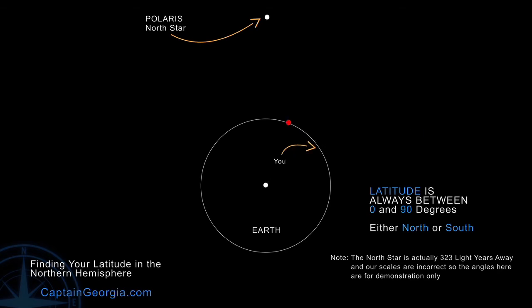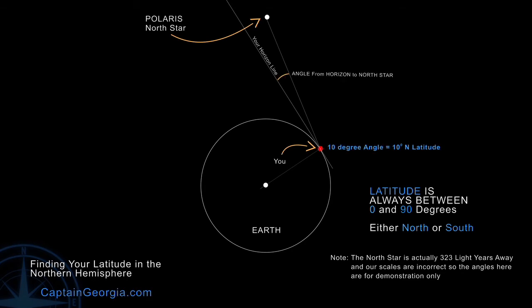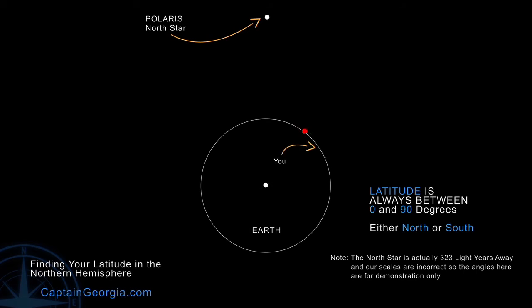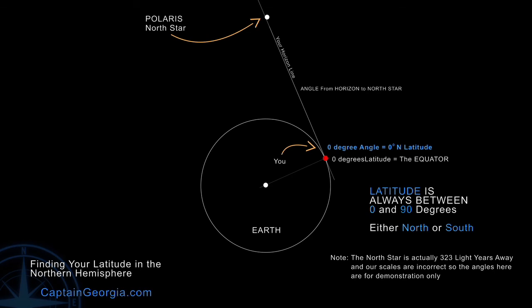As we continue to move south, our horizon always appears to be the same to us, but the angle to the North Star varies. We have a horizon line and we have the North Star, and our angle is 10 degrees. So therefore, we are at 10 degrees north latitude. And finally, when we get to the equator, because we have to have a great big Earth so you can see a little tiny North Star, the North Star is on the horizon. Therefore, it's zero degrees, and the equator is zero degrees latitude.